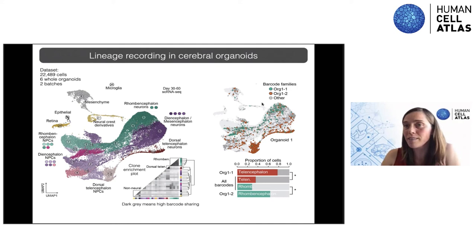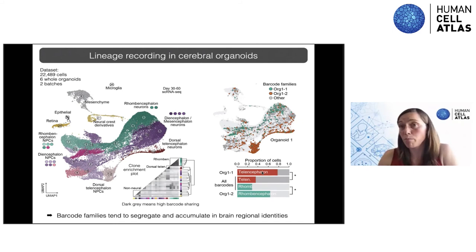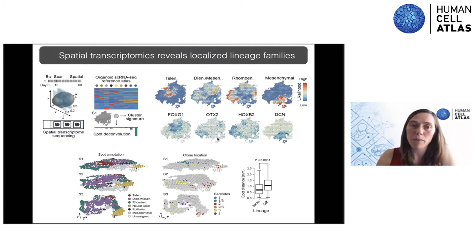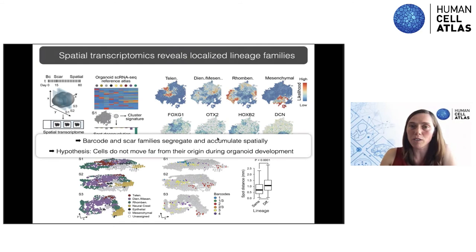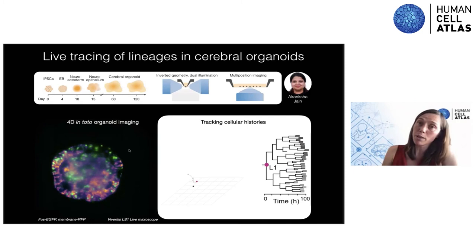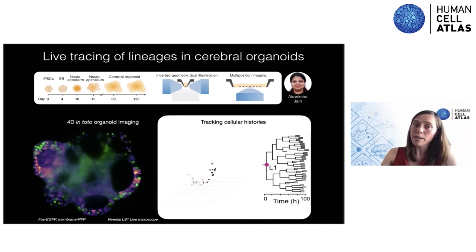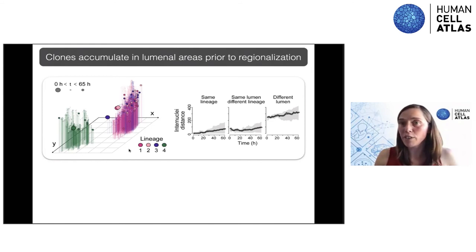We could see an enrichment of barcode families in different brain regions — for example, one family enriched in the telencephalon and another highly enriched in hindbrain regional identity. We confirmed this links to spatial enrichment of lineages when we did spatial transcriptomics on these Eye Tracer organoids, confirming that there is clonality of brain regions developing in these brain organoids. We then confirmed this with light sheet measurements on organoids tracked over time — essentially a 4D measurement — directly measuring lineage relationships and quantifying clonality of luminal regions as the brain organoid develops.